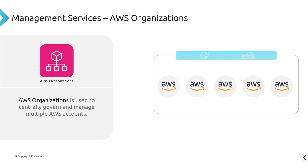AWS Organizations lets you get governance around your billing, governance around security, and restrict access to services that are not important for your business. Organizations is the account organizer.